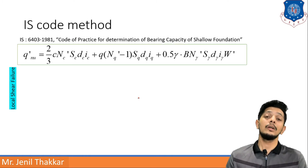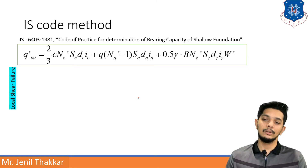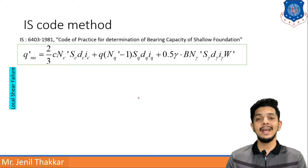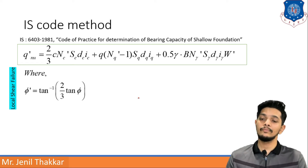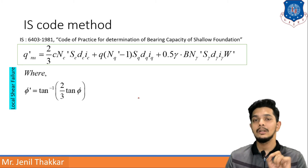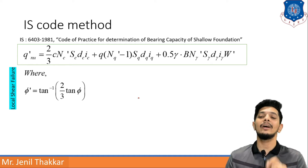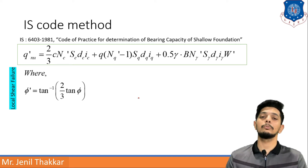The IS Code also provides a formula for local shear failure: q'_nu = (2/3)·c·N'c·Sc·dc·ic + q(N'q - 1)·Sq·dq·iq + 0.5·γ·B·N'γ·Sγ·dγ·iγ·W dash. For local shear failure, φ must be replaced by φ dash, where φ dash = tan⁻¹(2/3 · tan φ).